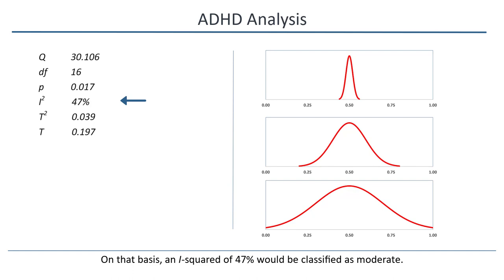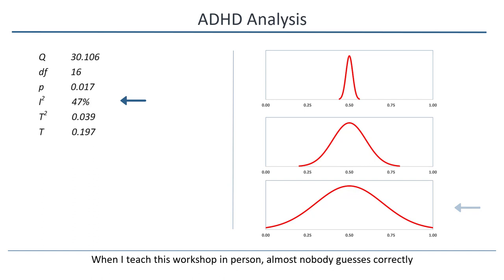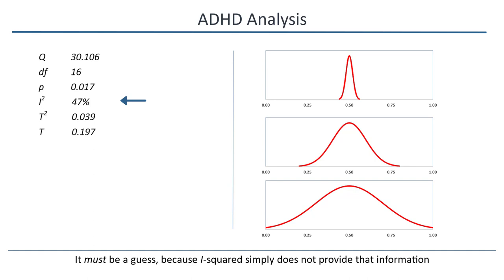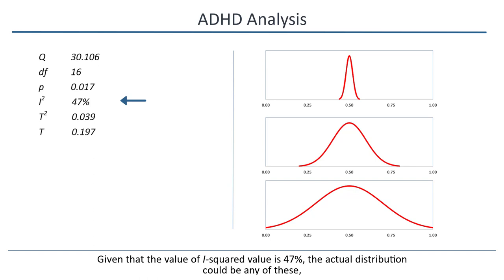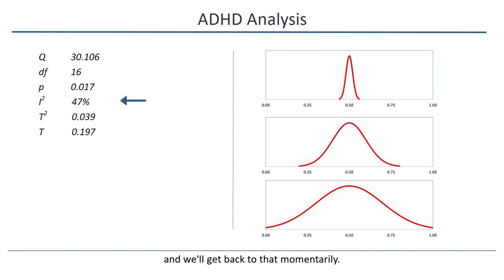Again, does the distribution of effects look like this, or like this, or like this? You probably guessed incorrectly. When I teach this workshop in person, almost nobody guesses correctly. But the more important point is that this is a guess. It must be a guess because I-squared simply does not provide that information. Given that the value of I-squared is 47%, the actual distribution could be any of these.